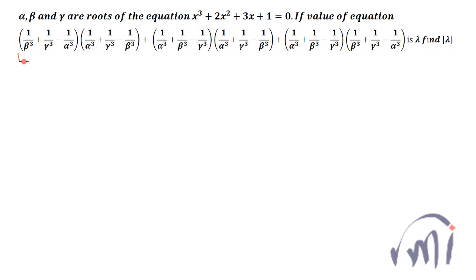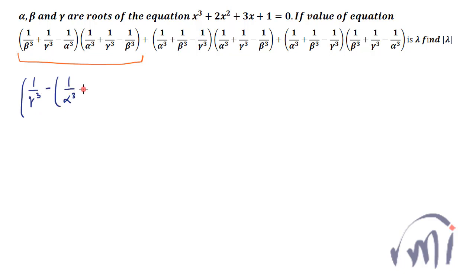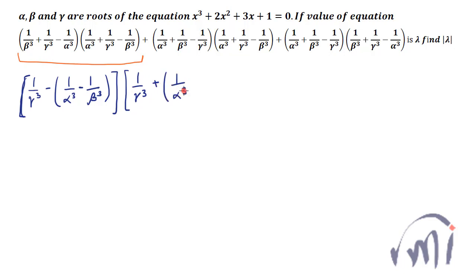See, if we take the first term of this equation, it can be written as 1/γ³ − 1/α³ − 1/β³. Converting into square brackets, this can also be written as 1/γ³ + 1/α³ − 1/β³.